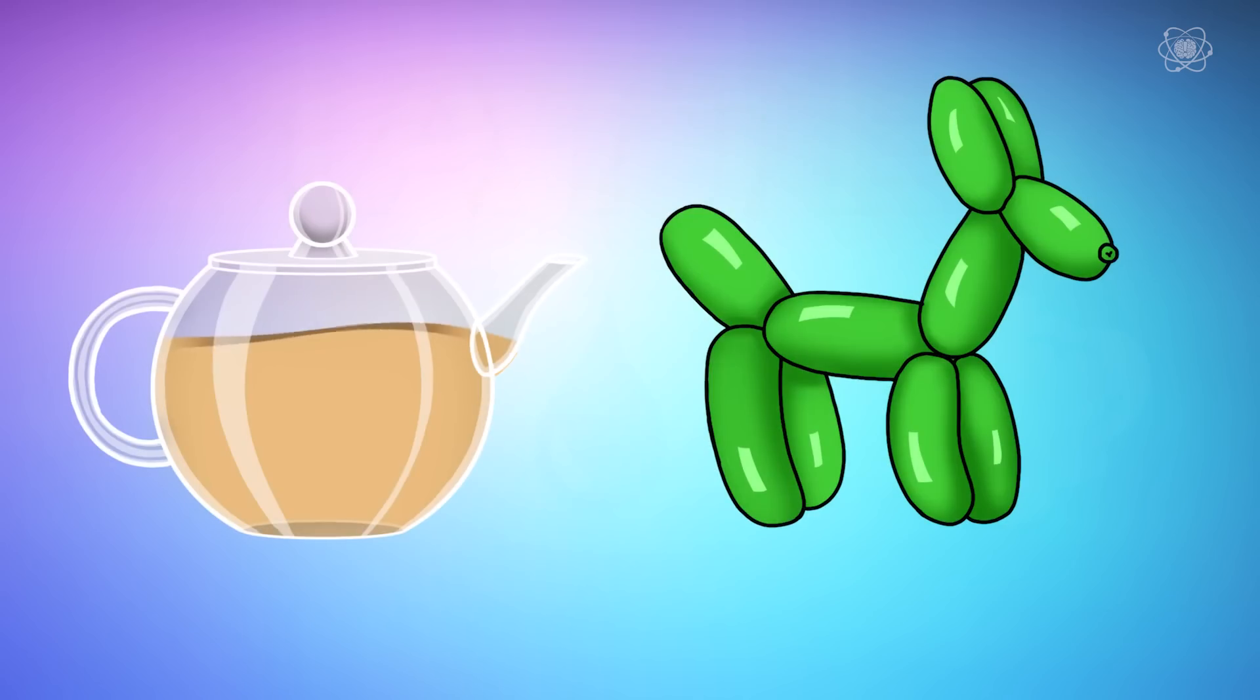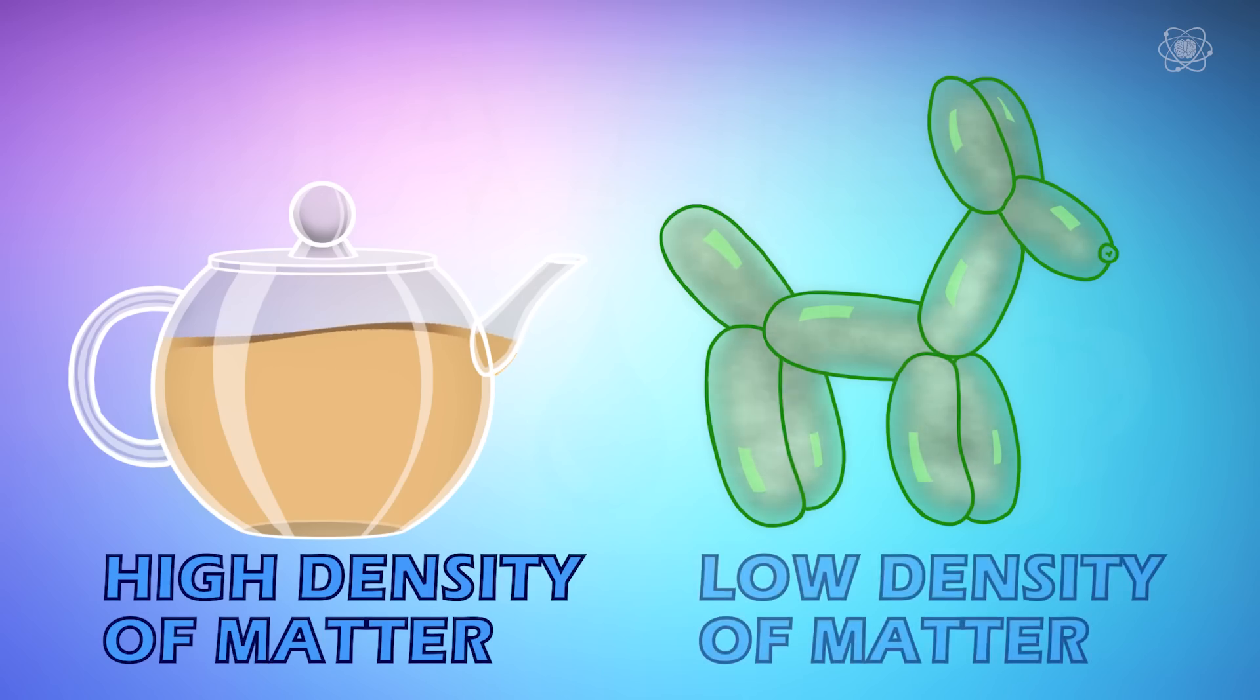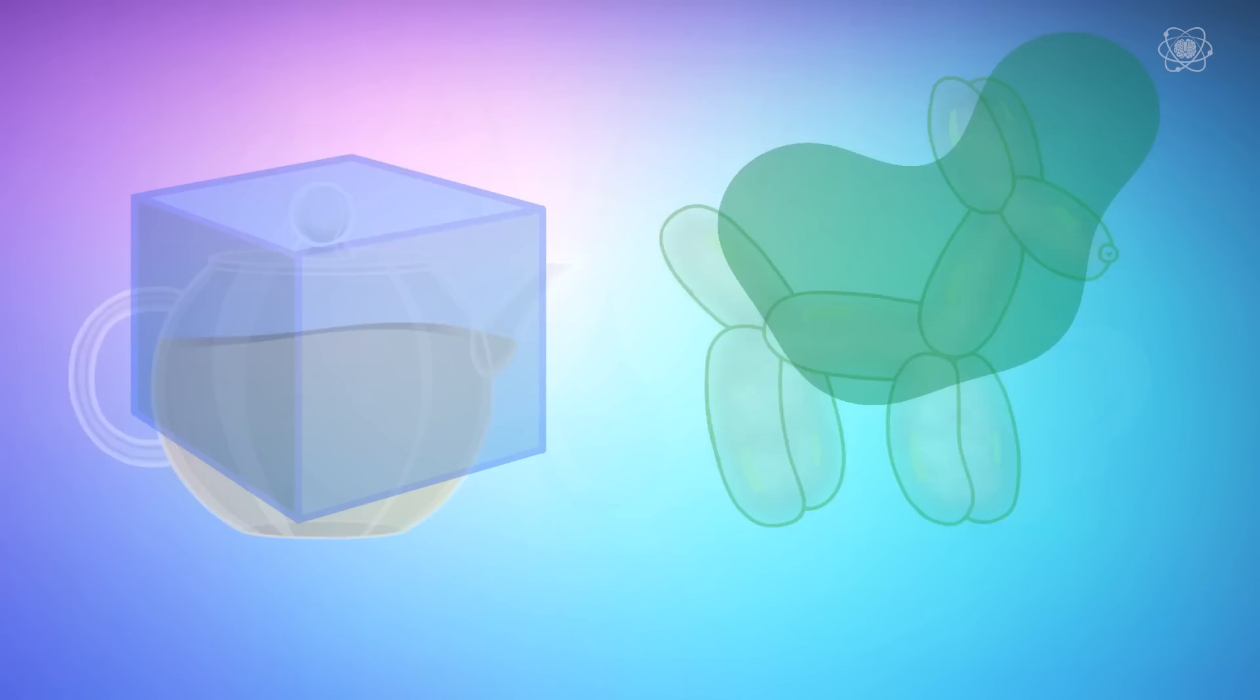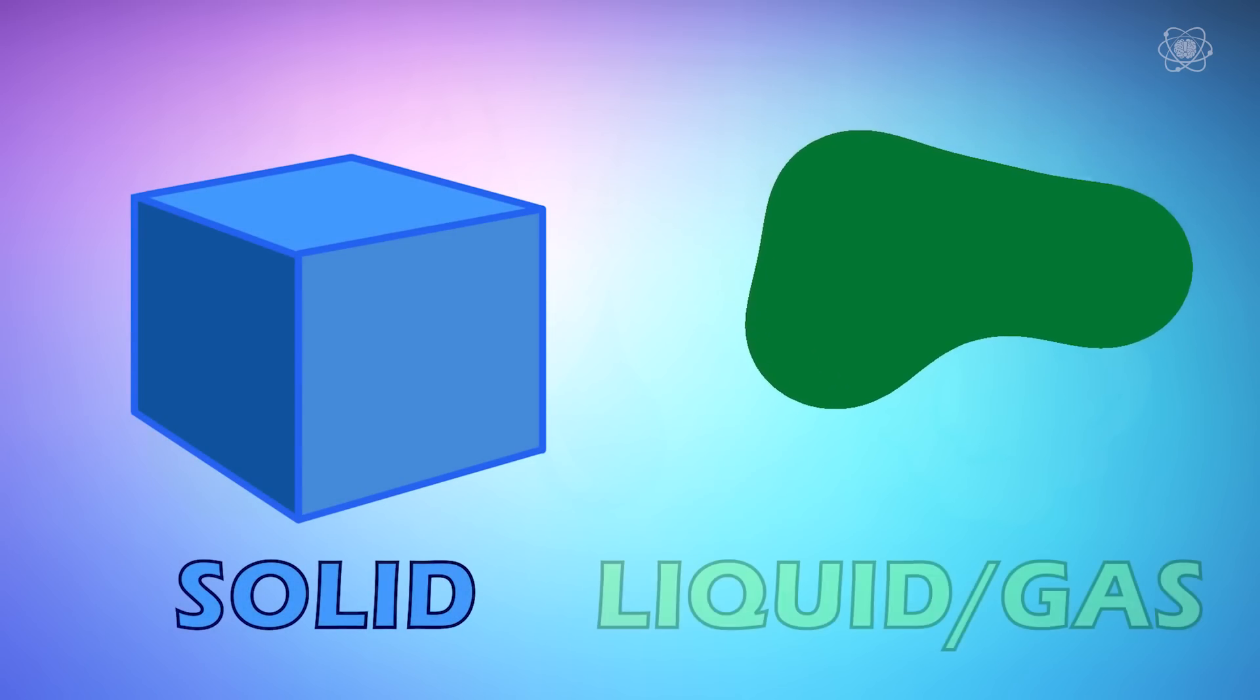So scientists treat both liquids and gases as fluids because they flow. By convention, we call a fluid with a high density of matter a liquid, and we call a fluid with a low density of matter a gas. So when we are talking about states of matter, we're really describing the state of the substance as either a solid or a type of fluid.